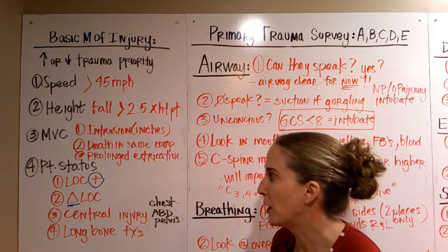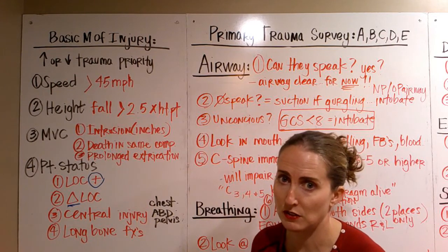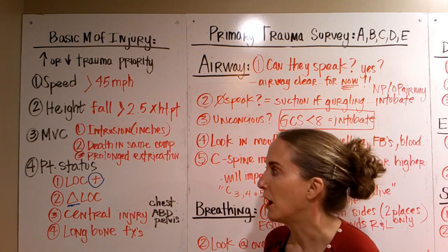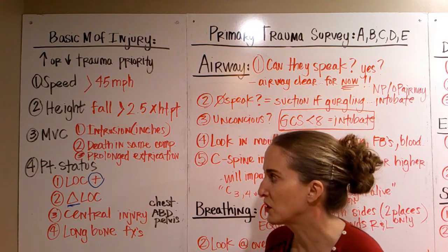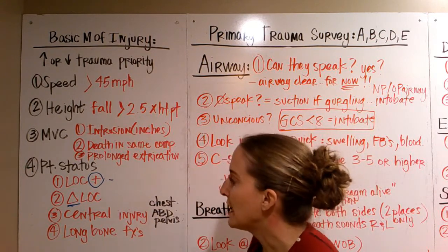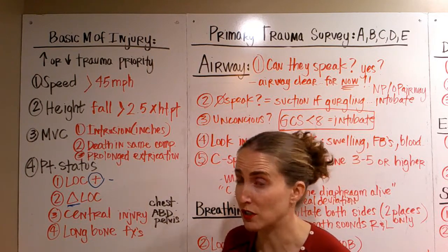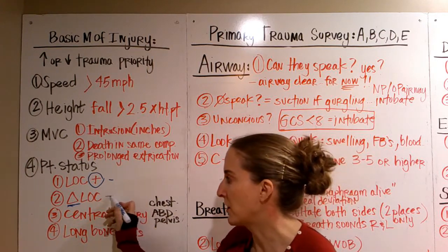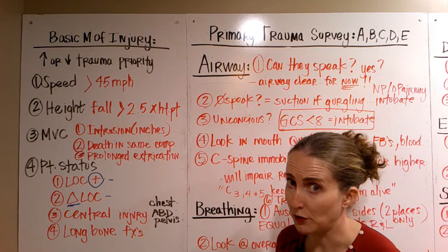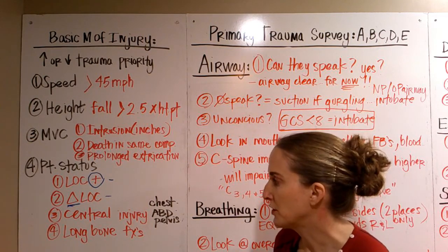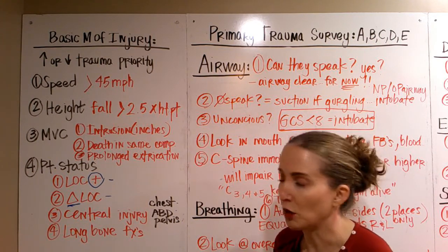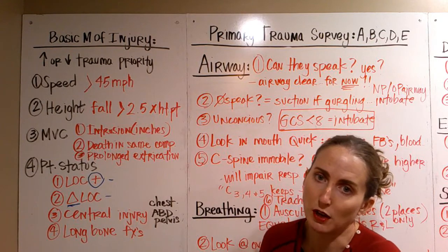We want to worry about prolonged extrication — you'll want to know how long it took to get them out of the car. Patient status: if they lost consciousness on scene, that's a positive loss of consciousness. If they have a change in their level of consciousness — walking and talking fine and then suddenly acting goofy, not acting themselves — that is a problem. Also if they have a central injury to their chest, abdomen, or pelvis, or if they have a long bone fracture, mostly femurs but also humerus.